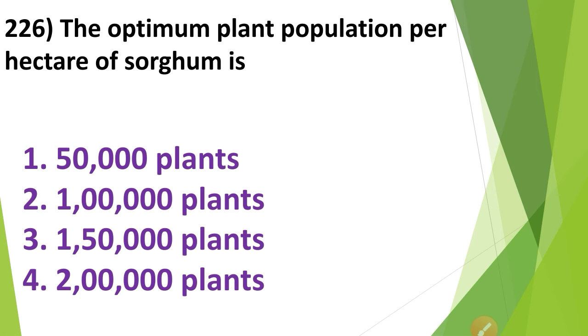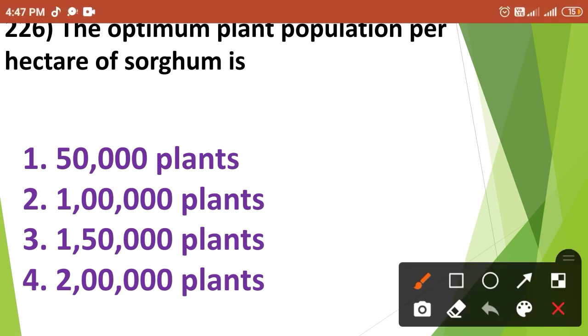The optimum plant population per hectare of sorghum is Option No. 3 — that means 1,50,000 plants per hectare.